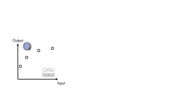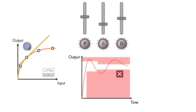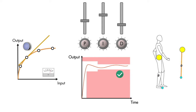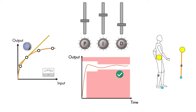In this course, you will simulate and linearize a model of a physical system, design and tune a feedback control loop, and validate your controller against the design requirements. By the end of the course, you will build a control system in Simulink to control the motion of a robotic leg.